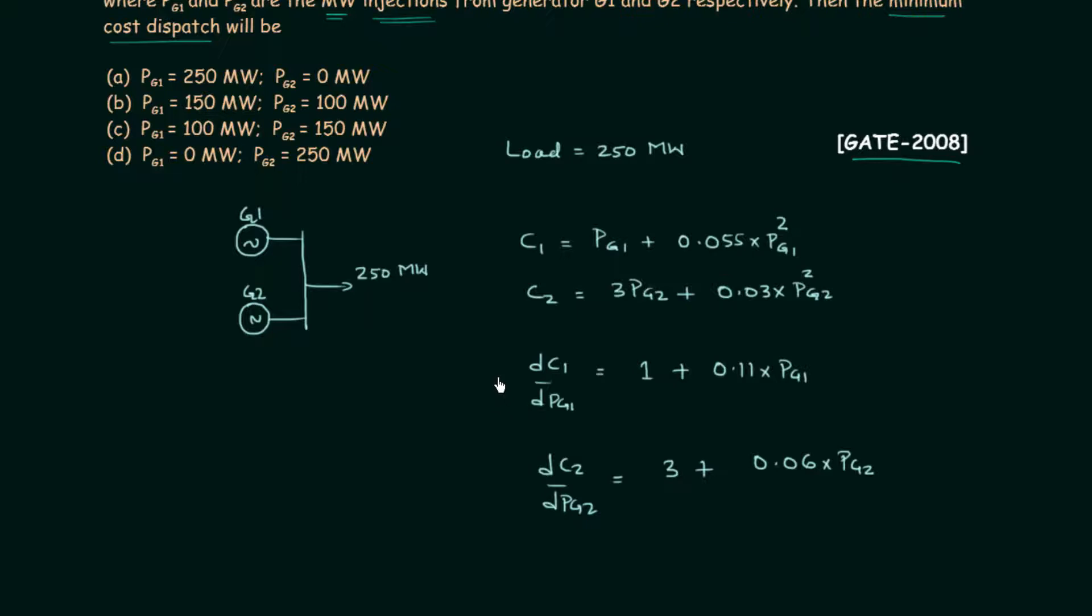Now for minimum cost, differentiation of C1 with respect to PG1 will be same as differentiation of C2 with respect to PG2. In this way we have 1 plus 0.11 times PG1 equal to 3 plus 0.06 times PG2. When you solve it, you will get one equation having two variables, PG1 and PG2.